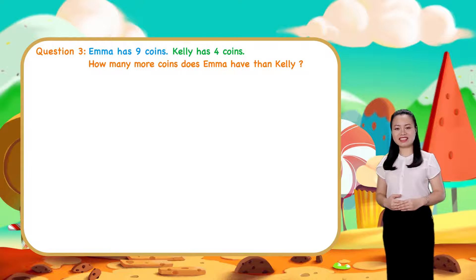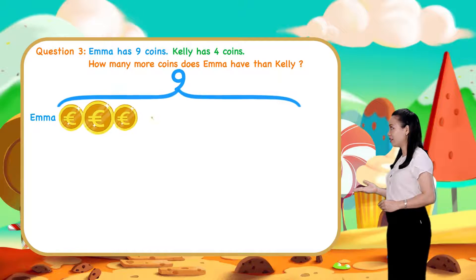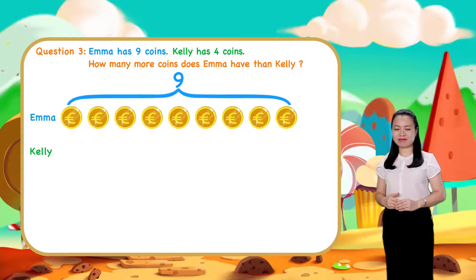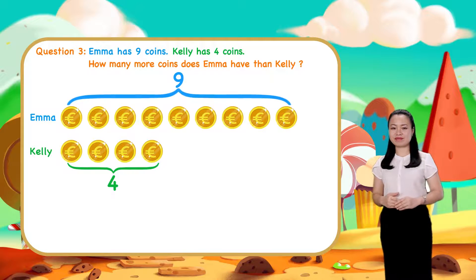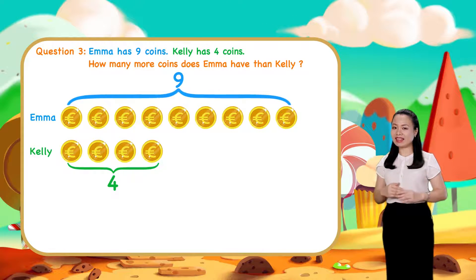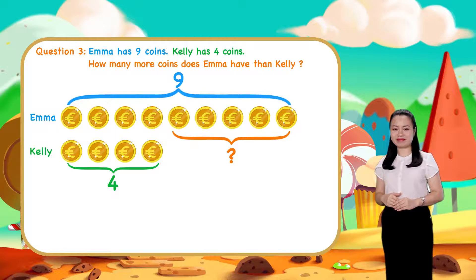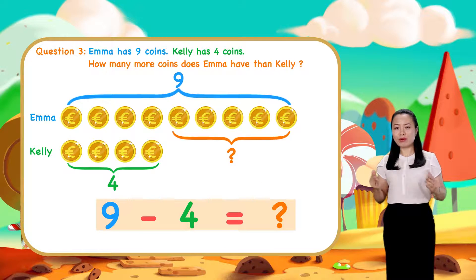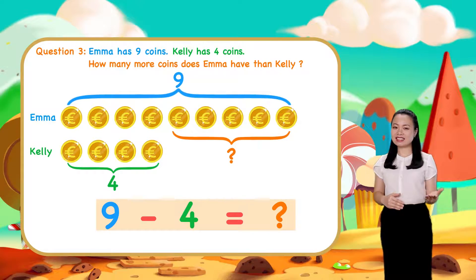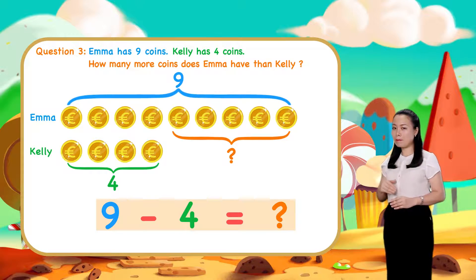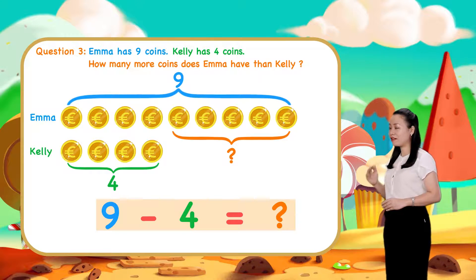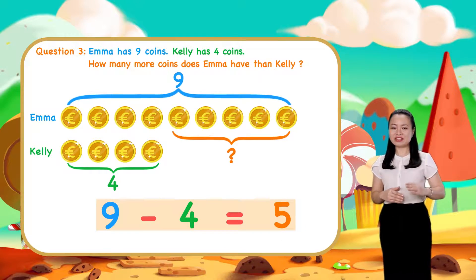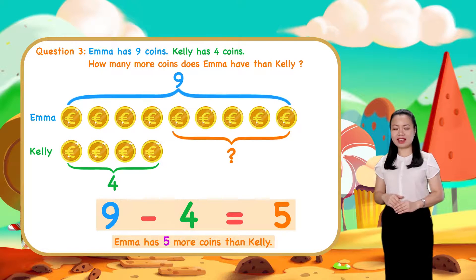Let's find the answer together. Emma has 9 coins. Kelly has 4 coins. So Emma has more coins than Kelly. We subtract 4 from 9 to find the number of more coins Emma has than Kelly. So, 9 minus 4 equals 5. We conclude, Emma has 5 more coins than Kelly.